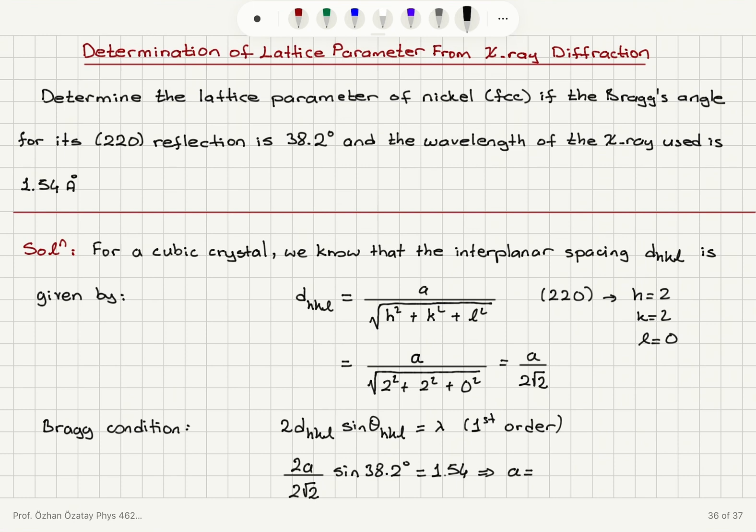And that gives me, for the lattice parameter A, 1.54 square root 2 divided by sine of the angle 38.2 degrees. And if you have noticed here, we have a cancellation of 2s. So, this is what A should be. And that gives me 3.52 angstroms, the lattice parameter.